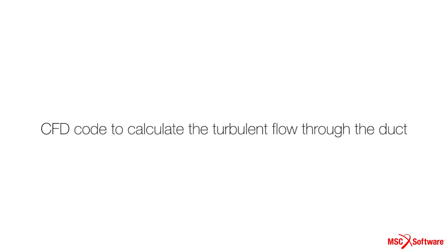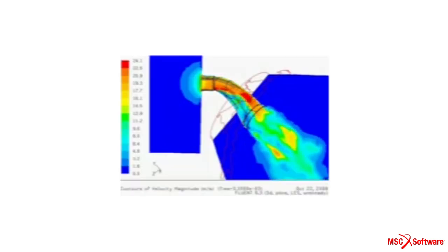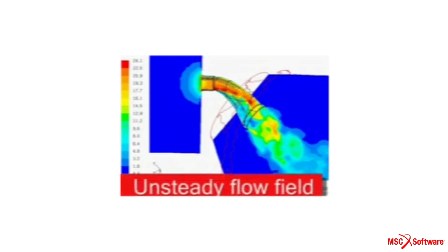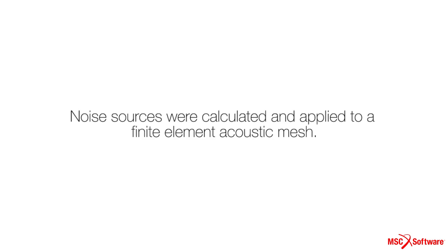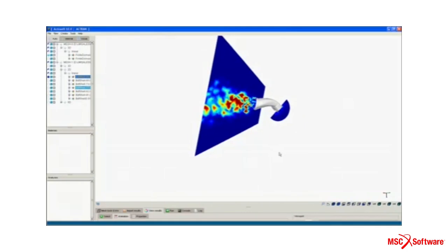First, Vistion used the Fluent CFD code to calculate the turbulent flow through the duct. The unsteady CFD results were directly imported into ACTRAN, where the noise sources were calculated and applied to a finite element acoustic mesh of air in the duct and the air outside the duct exit.